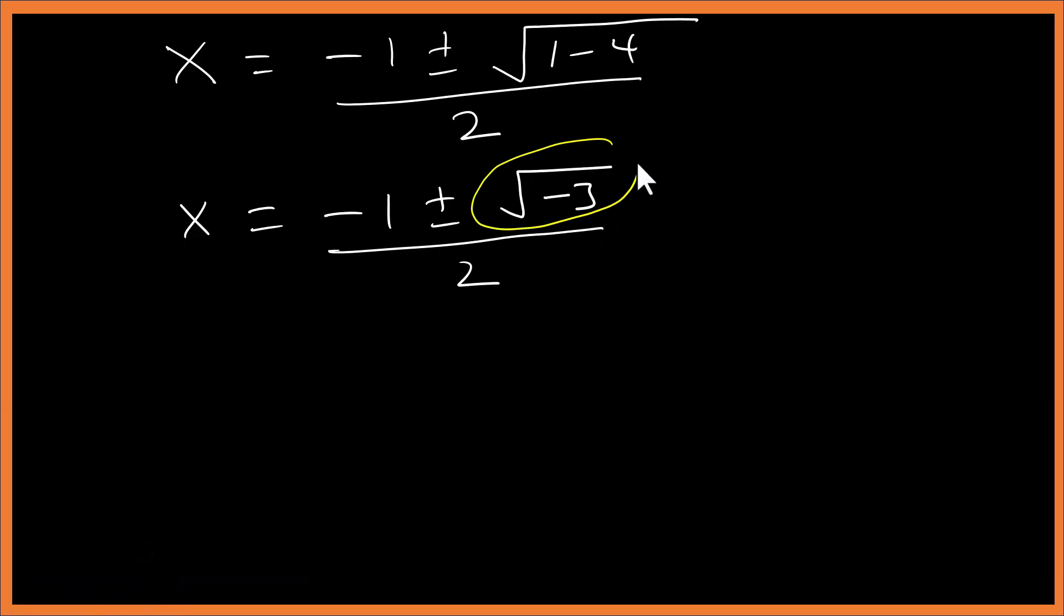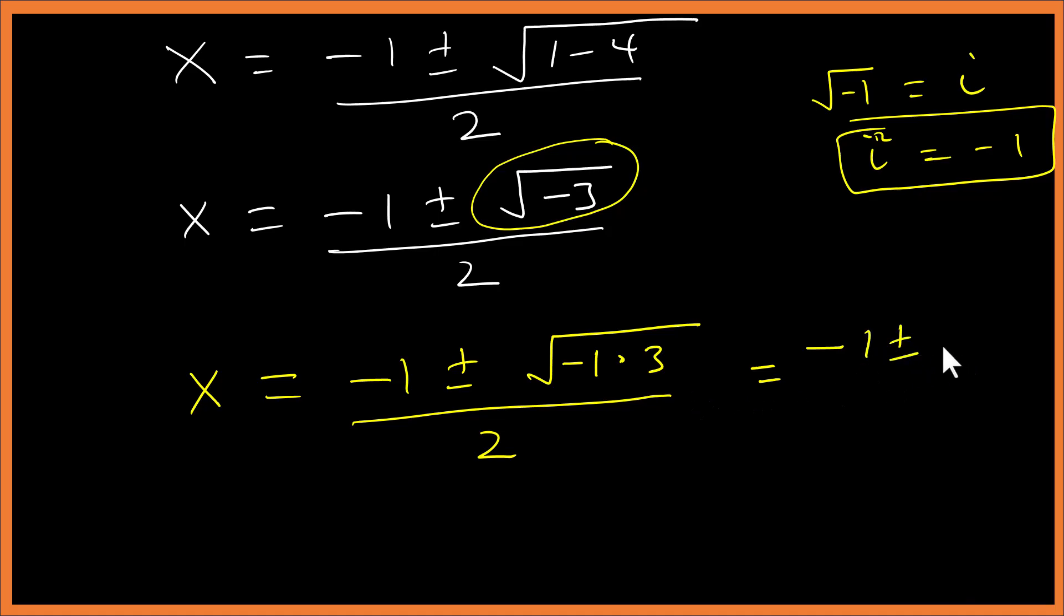So we are heading to complex numbers. Remember, square root of minus 1 is the same as i, which means that i² is the same as minus 1. So from here we are going to adjust this: x = (-1 ± √(-1 × 3)) / 2, which gives the same as (-1 ± √3 × √(-1)) / 2. So my x will be (-1 ± i√3) / 2.